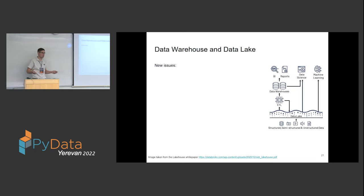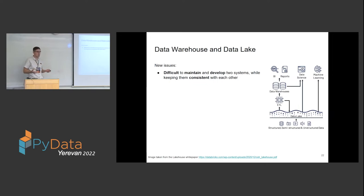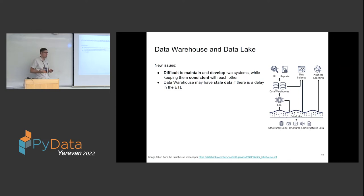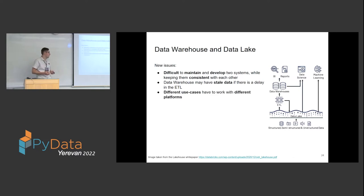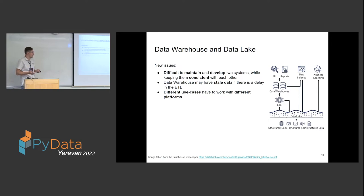Now when we have these two systems, new issues come out. The main one is that with two systems you have to keep them in sync — new conventions or features in one require the other to adjust, and usually different teams of engineers are working on them. Data in the warehouse can become stale due to incidents or delays. Different use cases have to work with one or the other platform, so different practitioners have to operate different systems. And we kind of duplicate the cost of storage and compute.